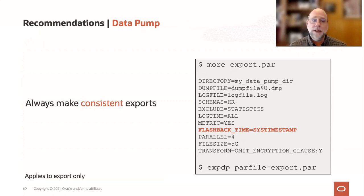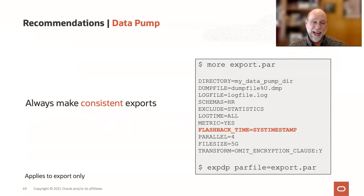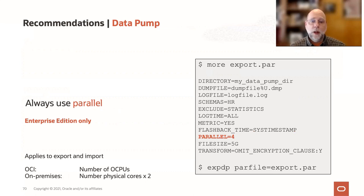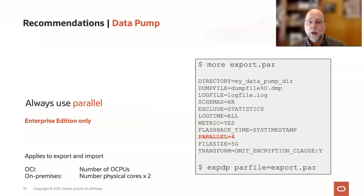Generally, when migrating a database, you want a consistent export. Unless you're going to be migrating in conjunction with GoldenGate, use the flashback_time or flashback_scn parameter to get that consistent export — that is an export-side parameter only, because on import everything will be in the dump file as of a particular point in time anyway. Use parallelism wherever possible — that's only an Enterprise Edition option, but parallelism makes everything go faster. The general guidance is to use the number of OCPUs on OCI, or on-premises use the number of physical cores times two, which is cpu_count in terms of Oracle parameters.